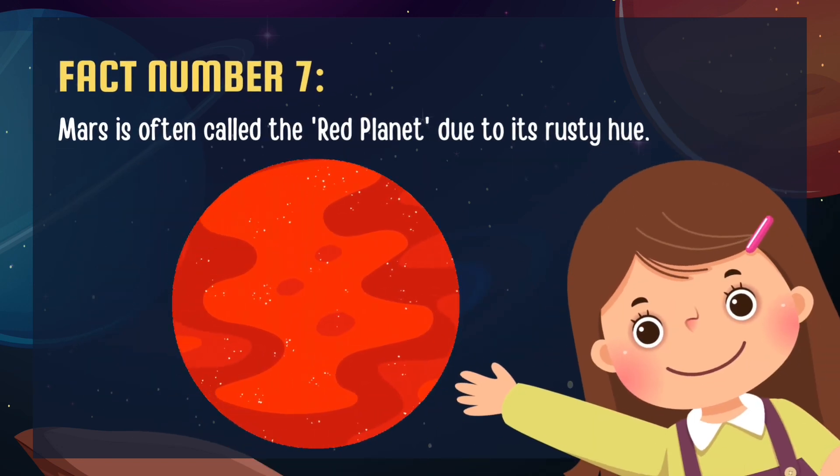Get ready for number 7, Mars. It's often called the red planet due to its rusty hue. Scientists think there might have been water on Mars long ago, which makes it super interesting.